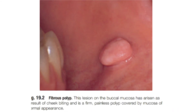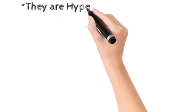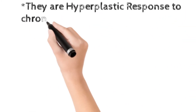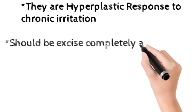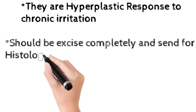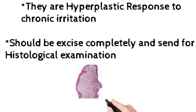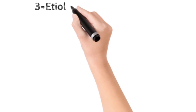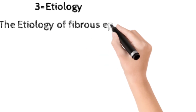The fourth important practical point is that these lesions are a hyperplastic response to chronic irritation. The fifth point is that they should be excised completely and sent for histological examination, like biopsy. These are the important practical points. Now we will study the etiology of each fibrous nodule separately.